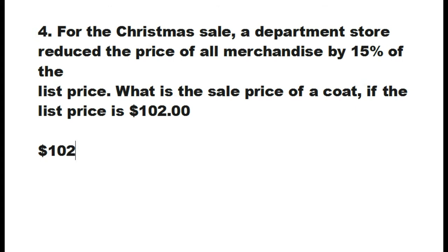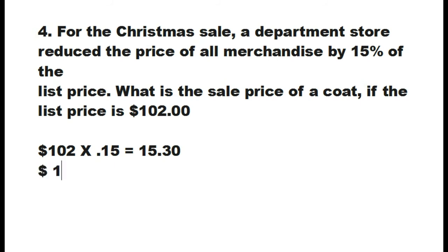So, 102 times 0.15, that's 15%, equals $15.30. So, $102 minus $15.30 equals $86.70.